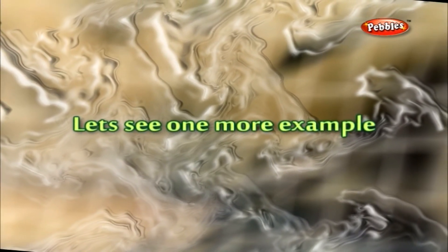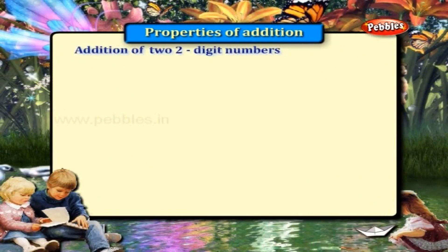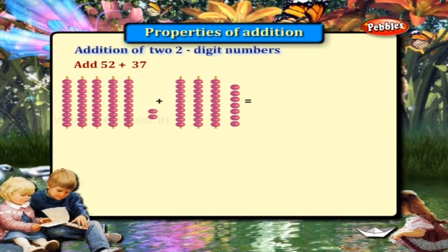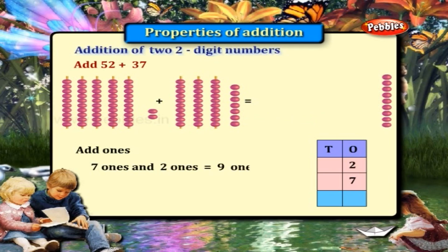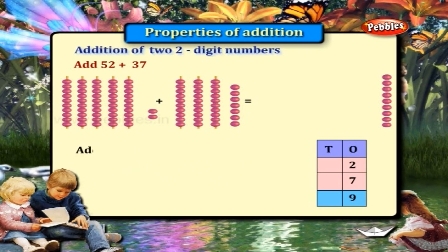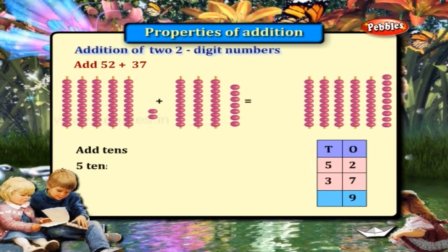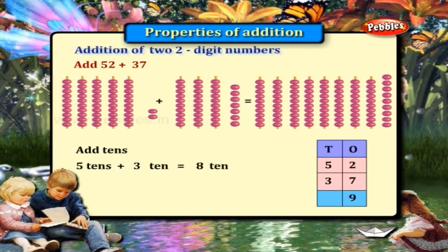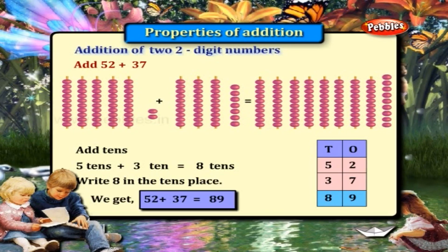Let us see one more example. 52 plus 37. We have to add the numbers in the ones place first. We have 7 ones plus 2 ones which is equal to 9. Write 9 in the ones place. Next we add the numbers in the tens place: 5 tens plus 3 tens is equal to 8 tens. Write 8 under the tens place. We get 52 plus 37 is equal to 89.